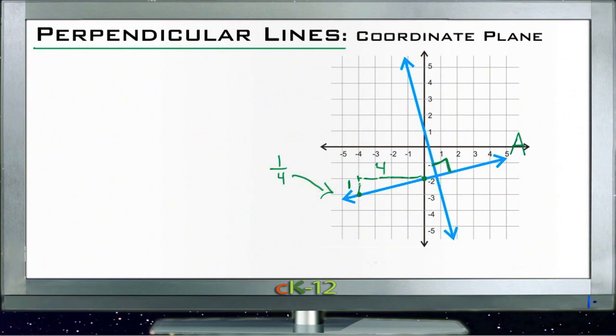If we then take a look at the slope of the other line, we'll call this line B up here. If we pick a point zero, one and then another point up here, say negative one, four, to get from this point to this point we have to rise four and run negative one.